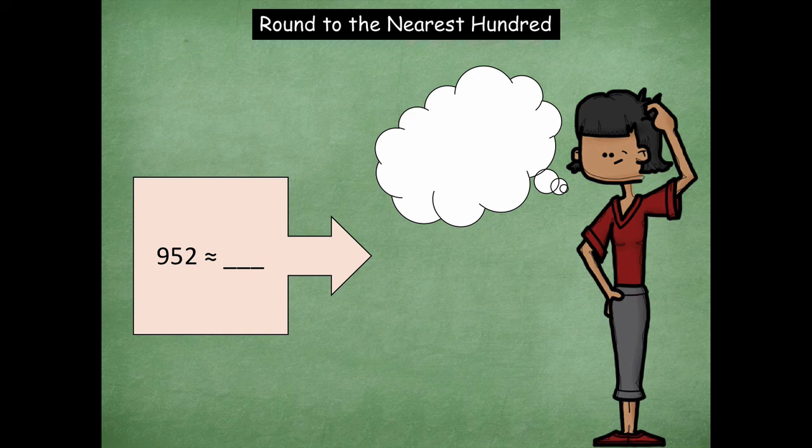952. What is that rounded to the nearest hundred? Yeah, it's 1,000. So that one's a little bit trickier because you have to go up into the next place to make it 1,000.